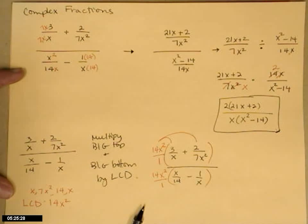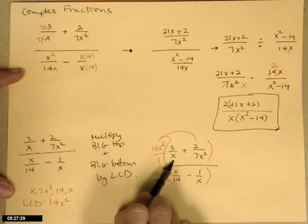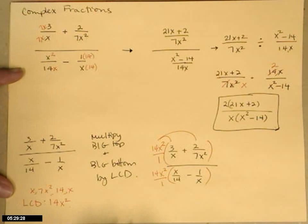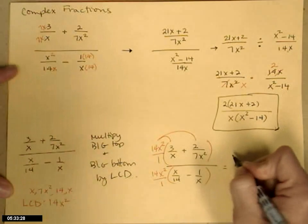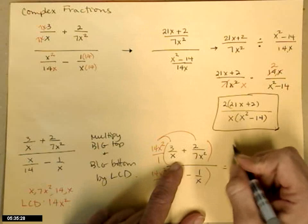It distributes, and as it distributes, it cancels each of those little denominators. So the 14x squared times the 3 over x.